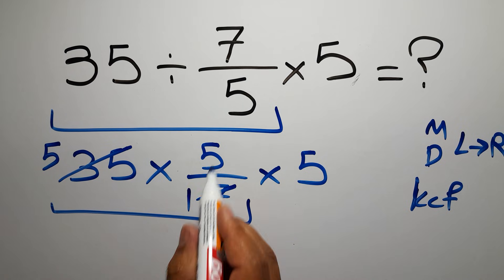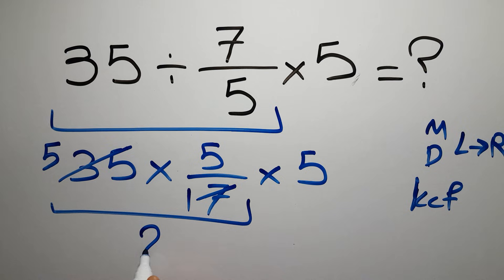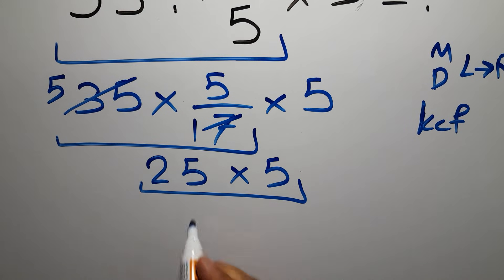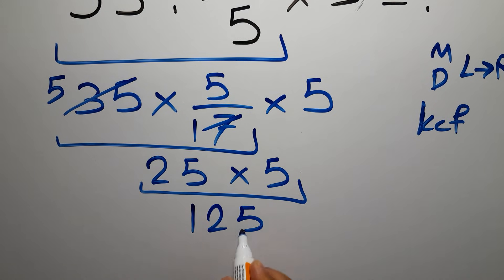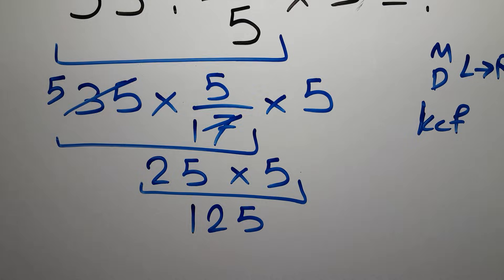So 5 times 5 which equals 25, and times 5 which equals 125. This is our final answer to this problem. The correct answer is 125.